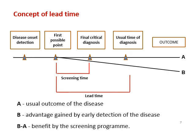If the disease follows the natural course of events, the outcome is A. But if it is detected by screening, the outcome will be B. So B is the advantage gained by early detection by screening, and B minus A is the benefit of a screening program.